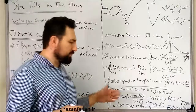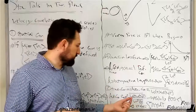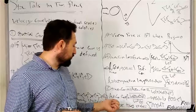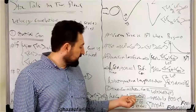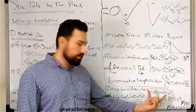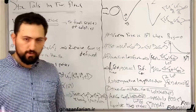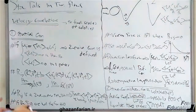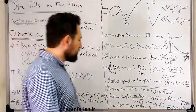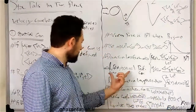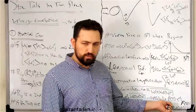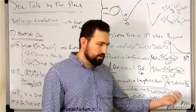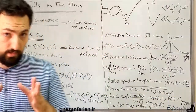Similar to the previous case, we can non-dimensionalize or normalize the definition. This gives the autocorrelation coefficient, shown by ρ as a function of t. The numerator is the time autocorrelation, and the denominator is the time-averaged squared velocity. ρ is therefore a normalized autocorrelation coefficient. ρ at time zero should be one — perfect correlation — similar to the spatial case. Using the Schwartz inequality, it can be shown that the autocorrelation coefficient at any time t is less than or equal to one.